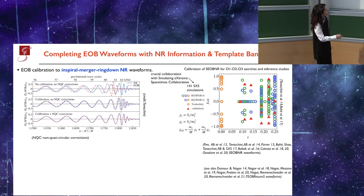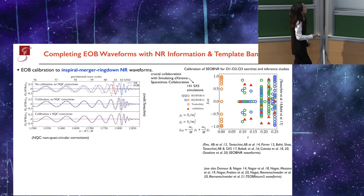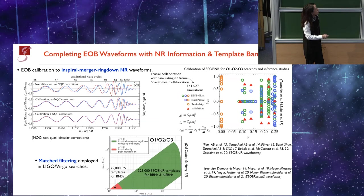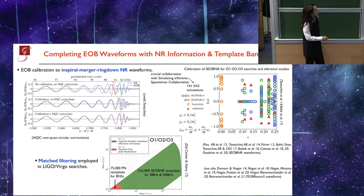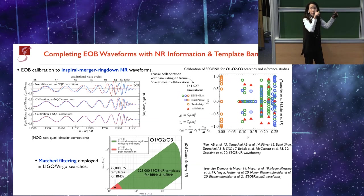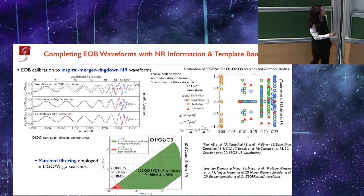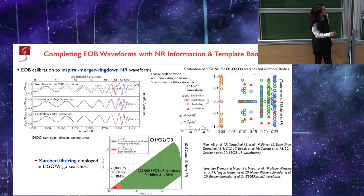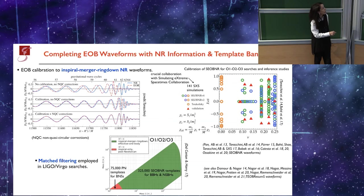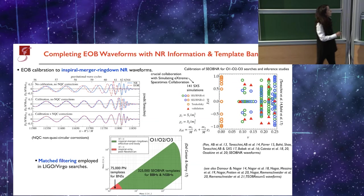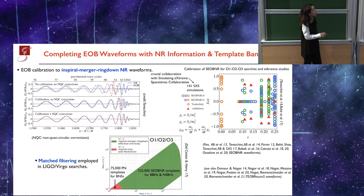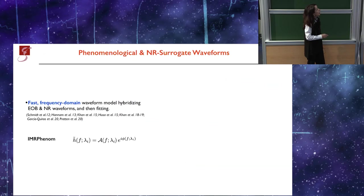The template bank that LIGO and Virgo has been using starting from the first run in 2015 is illustrated here. This is the projection in the masses M1, M2 of the binary. There are also the directions of the spins. For masses larger than 3 solar masses, of the order of 300,000 EOBNR templates have been used for the search. For lower masses, plain post-Newtonian templates can be used because the signal-to-noise ratio in the merger is basically negligible, so one uses just inspiral waveforms from post-Newtonian theory.